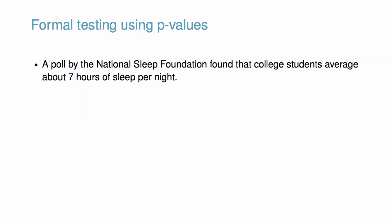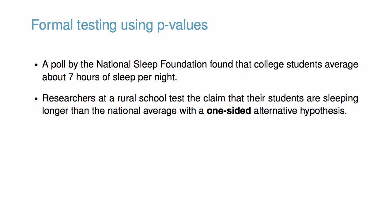Let's do an example. A poll by the National Sleep Foundation found that college students average about 7 hours of sleep per night. Researchers at a rural school test the claim that their students are sleeping longer than the national average with a one-sided alternative hypothesis. The null hypothesis is that the true mean hours of sleep equals 7, and the alternative hypothesis is that the true mean hours of sleep is greater than 7.